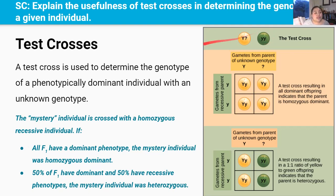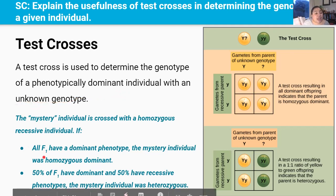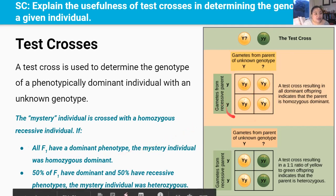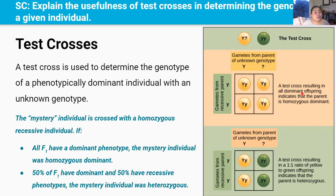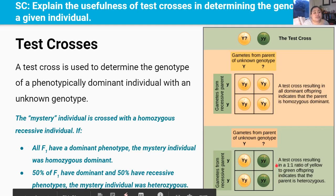A test cross is used to determine the genotype of a phenotypically dominant individual with an unknown genotype. If the test cross produces an F1 generation that all have the dominant phenotype, the mystery individual must be homozygous dominant. But if the test cross produces an F1 generation where 50% of the peas had the dominant phenotype and 50% had the recessive green phenotype, then the mystery individual must be heterozygous.